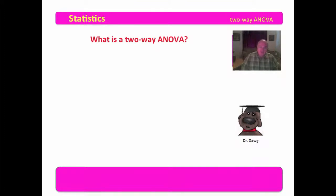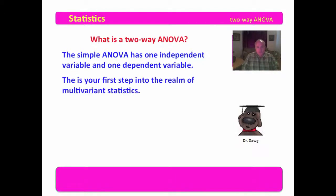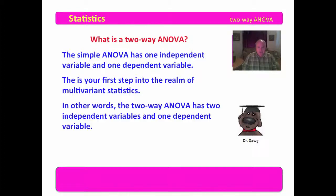The real question is: what is a two-way ANOVA? We've done a one-way ANOVA — what's a two-way ANOVA? Let's do this first in words, and then we will look at pictures. The simple ANOVA has one independent variable and one dependent variable. This is your first step into the realm of multivariate statistics. The two-way ANOVA has two independent variables and one dependent variable.